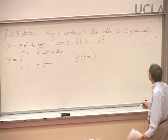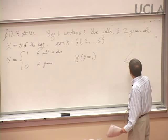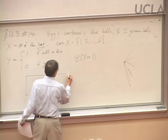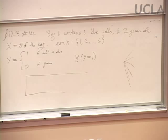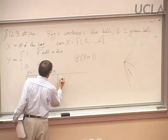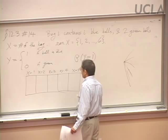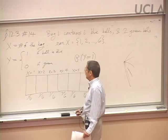What the problem asked for was the probability of getting a blue ball — the probability that the random variable Y equals 1. Probably you worked this out by looking at the six different cases that could occur. Let me organize that in a slightly different way. There are six cases: X could be 1, 2, 3, 4, 5, or 6. It's a fair die, so we know the probability for each piece of this partition.